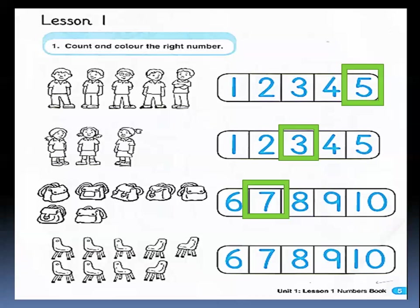And how many chairs do we have? Let's count the chairs: one, two, three, four, five, six, seven, eight, nine. These are nine chairs. Very, very good.